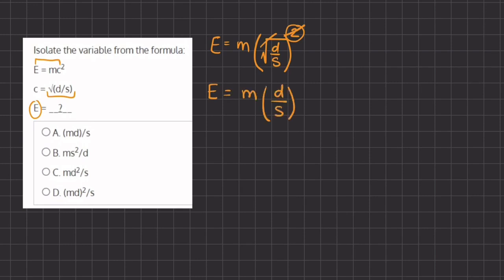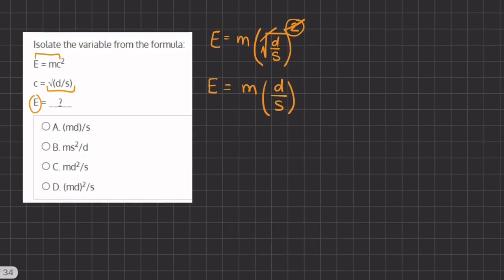So there is no more square root and there is no more squared, there is no more to the power of 2 because they canceled each other out. So now we can multiply these two expressions together. So we have e equals m times d which is md divided by s.